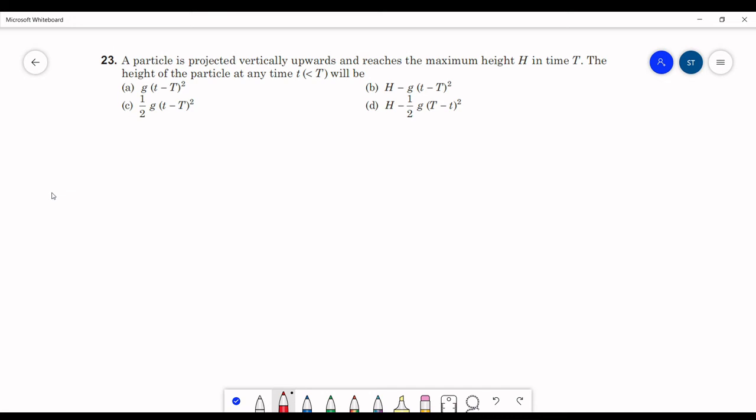In this question, a particle is projected vertically upwards and reaches a maximum height of h in time T. The height of the particle at a time small t, which is less than capital T, will be what?